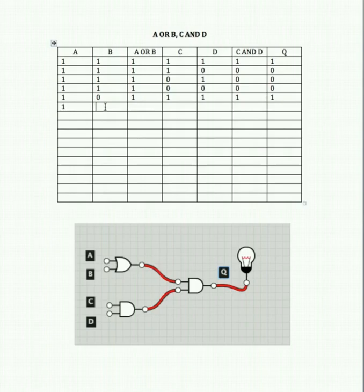Next: A ON, B OFF for the OR gate, and C ON, D OFF for the AND gate — that's 1 and 0. A or B is 1. C and D: 1 and 0 for an AND gate is 0. That gives us an output of 0 altogether.